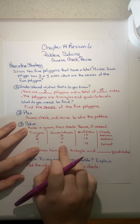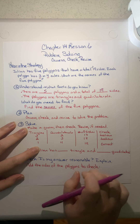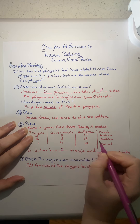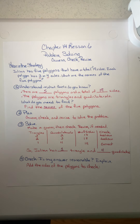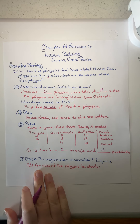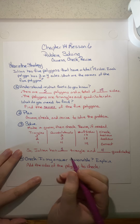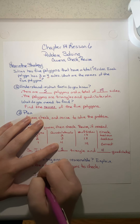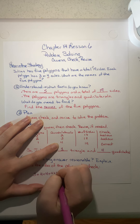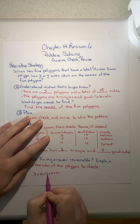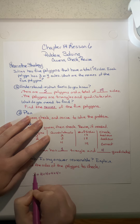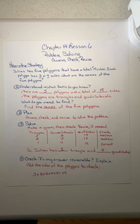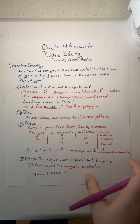One triangle and four quadrilaterals ended up being 19 sides, which is exactly correct. So Julian has one triangle and four quadrilaterals. Let's check that real quick. We had one triangle, which is three sides, and four quadrilaterals. Four times four is 16, plus three is 19 sides. So that is actually correct. We're guessing a little bit and then checking it and making sure we're doing it right.